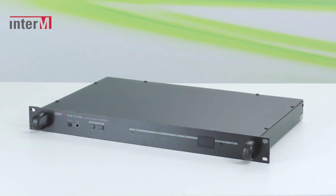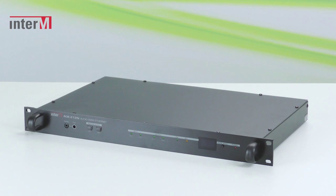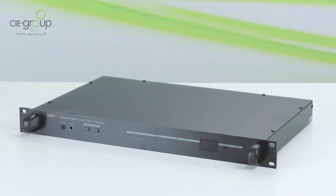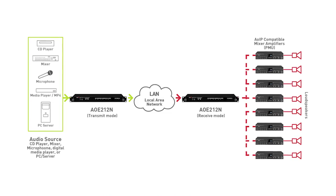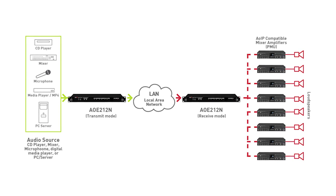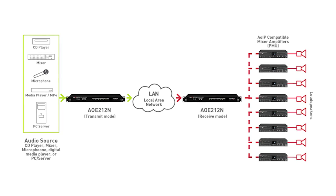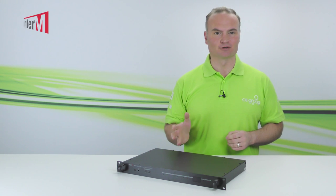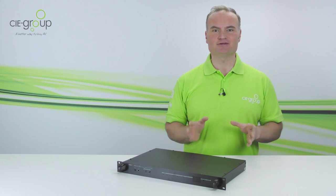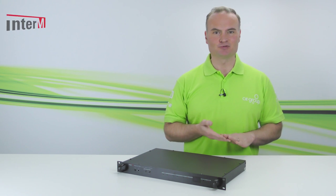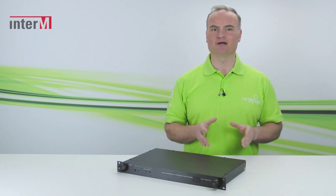So let's take a look specifically at the new InterM AOE212N device and how it fits into an audio over IP system. As you can see, the device is a standard 19 inch rack mounting unit, which reflects the AOE's application for professional audio systems. It's designed to work hand in hand with conventional 100 volt line audio systems — i.e. standard amplifiers and loudspeakers — whilst increasing the flexibility by adding in audio over IP distribution to send conventional audio sources such as microphone signals, CD or audio media players to standard 100 volt line or low impedance amplifiers in multiple zones over a standard Ethernet local area network.